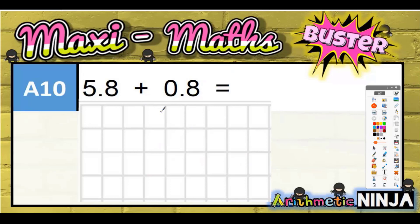Question 10: Column method with decimals. One digit per square, 5.8 add 0.8. Get it all lined up nicely in the columns, don't squash more than one digit into a square, and then just work it out.